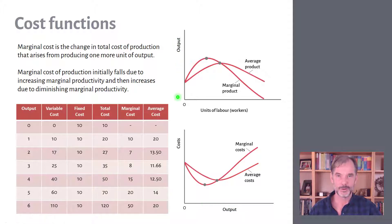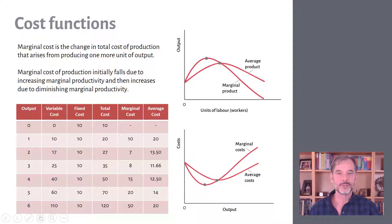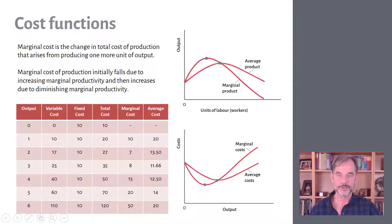On this cost graph, the vertical axis shows costs and the horizontal axis shows output in pallets. Costs start up here because fixed costs occur regardless of production. At zero output, I have fixed costs of 10 and a total cost of 10. For the first unit of output, I have a variable cost of 10, fixed cost of 10, and total cost of 20.